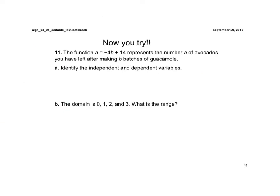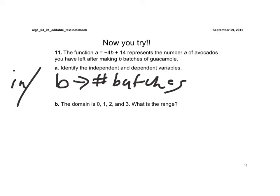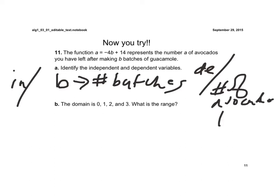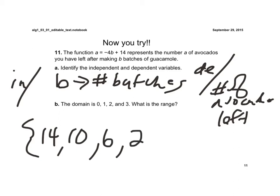Now you try. The function A equals negative four B plus 14 represents the number A of avocados you have left after making B batches of guacamole. B, the number of batches, is our independent variable. Our dependent variable is the number of avocados we have left. Plugging in the domain values, we get 14, 10, 6, and 2 as our range values.